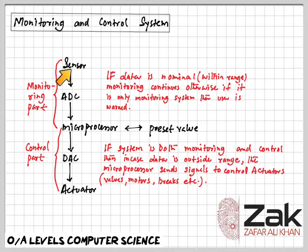Real data is analog in nature. This means that it is constantly changing and does not have a discrete value. Analog data usually requires some form of interpretation.